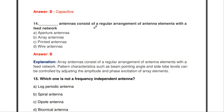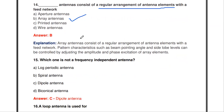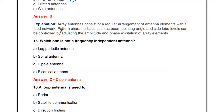Which type of antenna consists of a regular arrangement of array elements with a feed network? The answer is array antenna. An array antenna consists of a regular arrangement of antenna elements with a feed network. The pattern characteristics such as beam pointing angle and side lobe level can be controlled by adjusting the amplitude and phase excitation of the array elements.